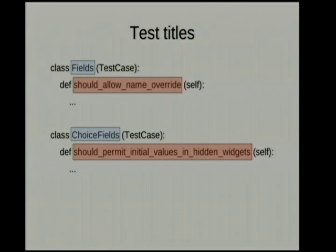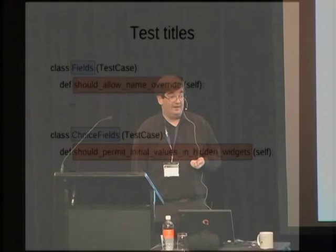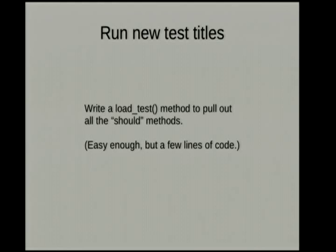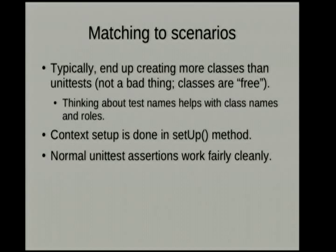You can rename tests and split them into classes so it becomes much clearer. For example: 'Fields should allow their name to be overridden,' and 'ChoiceFields should permit initial values in hidden widgets' — that second one is actually what 'show_hidden_fields' was testing. If that test fails, the message now tells you exactly what's wrong and what should be happening. In BDD-style tests you write method names as sentences. Because they don't start with 'test,' you need to override 'load_test_methods' in unittest to tell it to load things starting with 'should' instead — not hard to do.